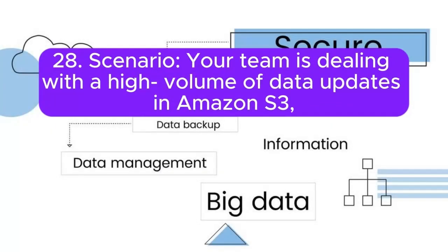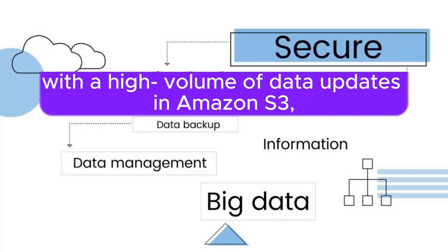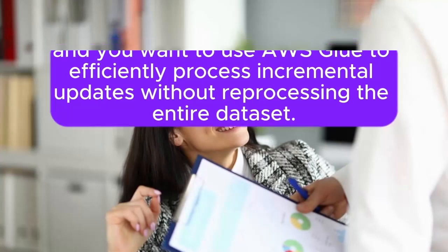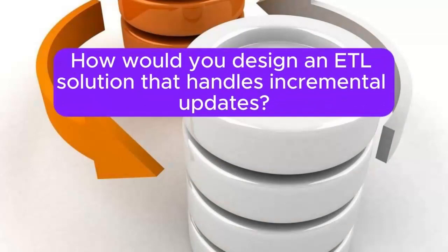Question 28: Your team is dealing with a high volume of data updates in Amazon S3, and you want to use AWS Glue to efficiently process incremental updates without reprocessing the entire dataset. How would you design an ETL solution that handles incremental updates?